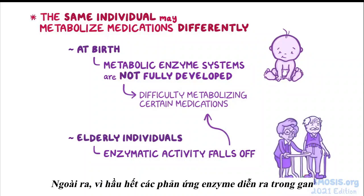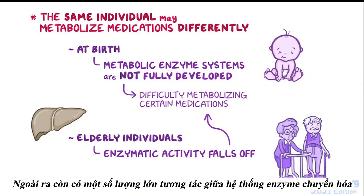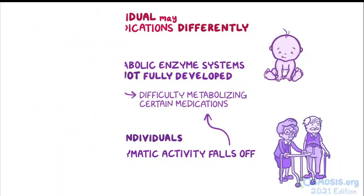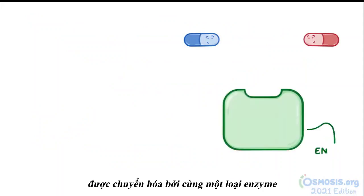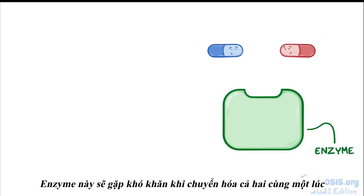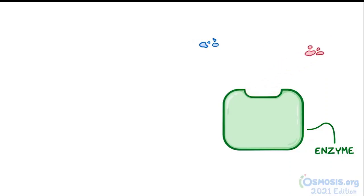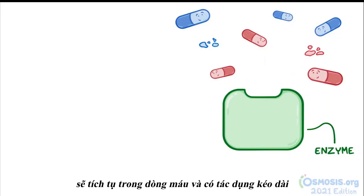Since most enzymatic reactions take place in the liver, a decrease in enzymatic activity may also be due to chronic liver disease. There is also an enormous number of interactions between metabolic enzyme systems and the things they break down. If an individual is given two medications at the same time that are metabolized by the exact same enzyme, that enzyme will have trouble metabolizing both at the same time, so it'll take longer to break them both down — and one or both medications will build up in the bloodstream and have prolonged action.